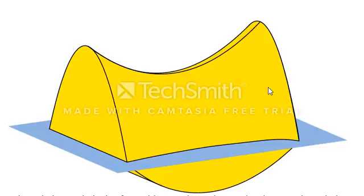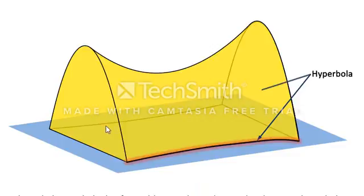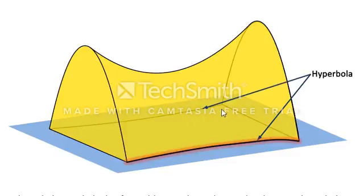If a horizontal section is cut through the surface of the hyperbolic paraboloid, it results in the formation of two hyperbolas - one on one side and the second hyperbola on the opposite side.